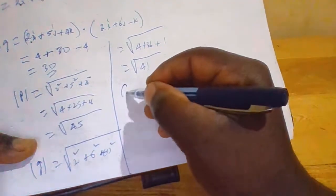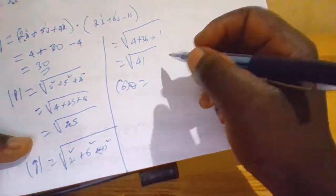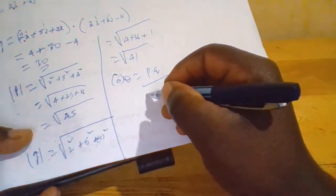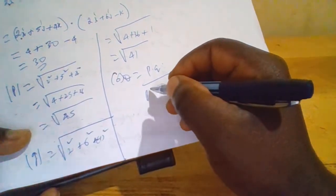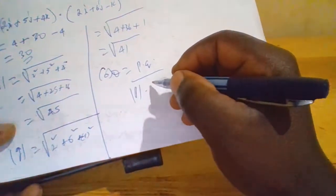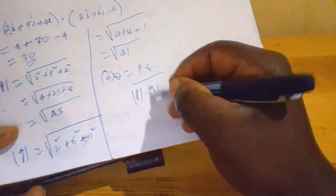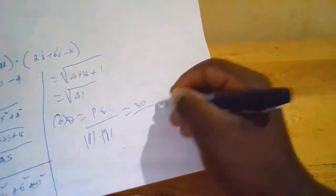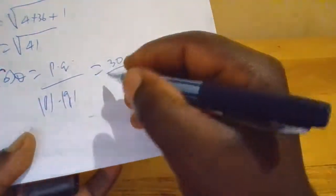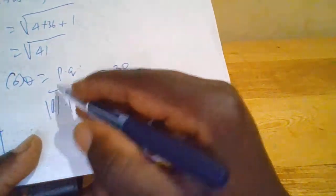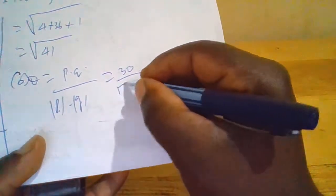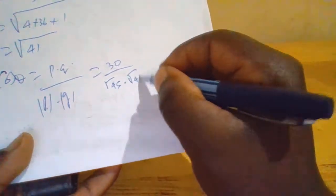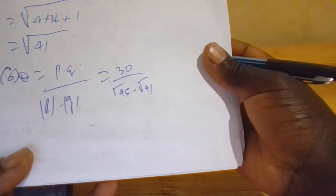Now we know that cos theta is given by p dot q over the modulus of p times the modulus of q. This equals 30 over root 45 times root 41.